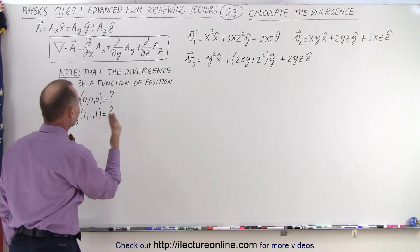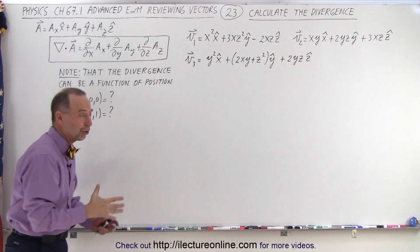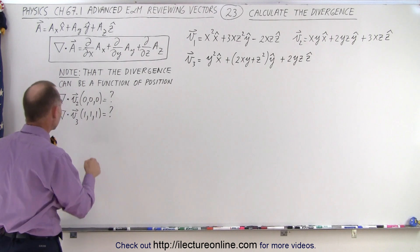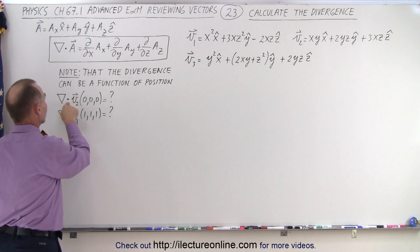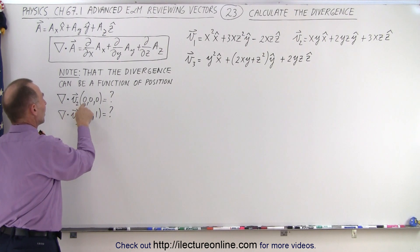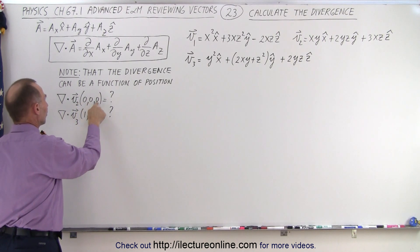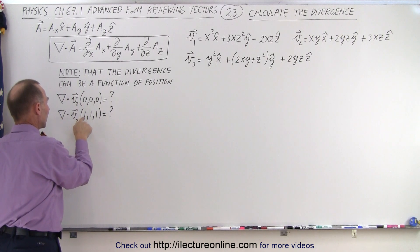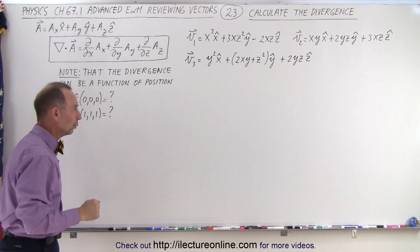Note that the divergence can be a function of position, so we're going to calculate the divergence of vector 2 when it's at (0, 0, 0), and the divergence of vector 3 at (0.1, 1, 1).